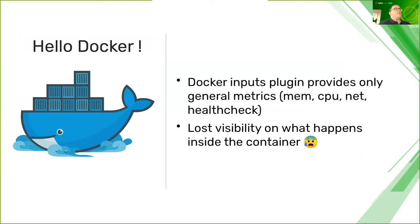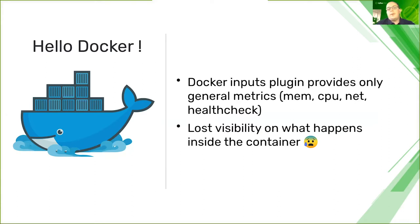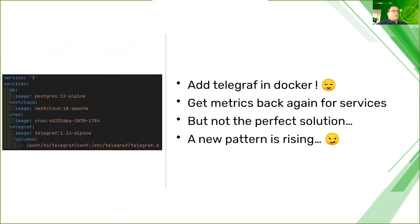A few years later, Docker came in. When you start deploying containers, you lose visibility on what happens within your containers by default, if you only have Telegraf on the host side. There is a Docker input plugin, but it only provides general metrics like memory, CPU, network, and health checks — you lose what happens within your applications. For example, if you have a Postgres container, you can see if it works, but you won't see query statistics and metrics as you used to have before.